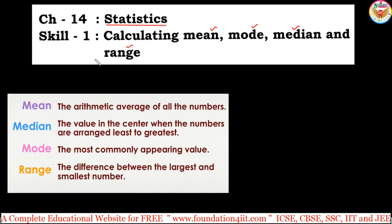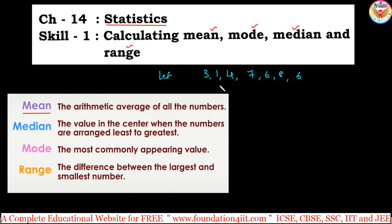First, let us see the meaning of these four terms. The first one is the mean. Mean is nothing but the arithmetic average of all the numbers. To find the mean, we use: sum of the observations divided by the number of observations.